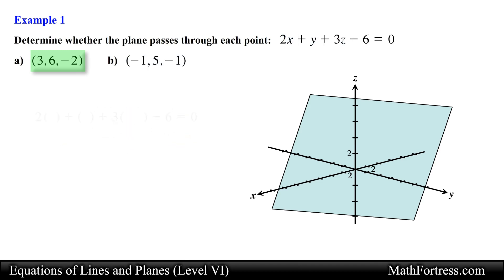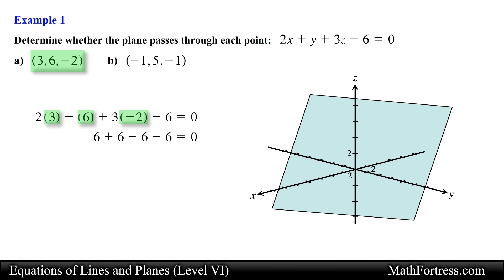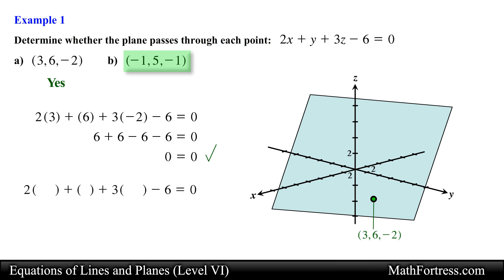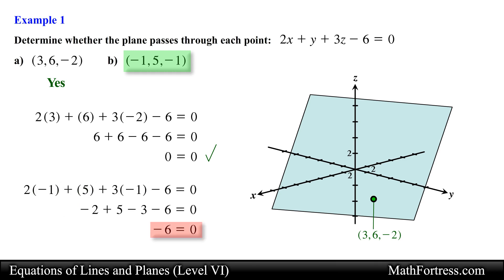Let's substitute the coordinates of the first point into the scalar equation of the plane and simplify the left side. Doing that we see that we obtain a true statement, so the plane passes through this point. Now let's do the same with the second point. In this case we get a false statement, so we conclude that the plane does not pass through this point. And this is our final answer.